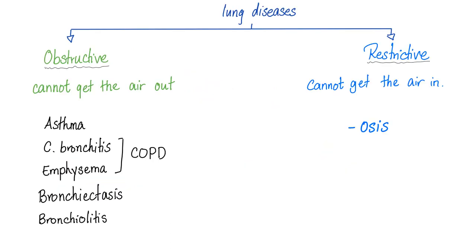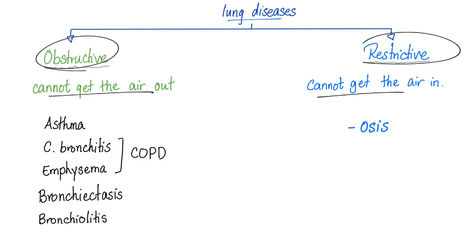As you already know, lung diseases are divided into obstructive and restrictive. Obstructive — I cannot get the air out. Restrictive — I cannot get the air in. Obstructive includes: asthma, chronic bronchitis, emphysema, bronchiectasis, and bronchiolitis.